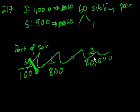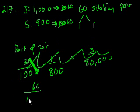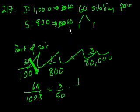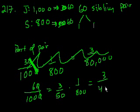Let's go back through our logic again. If I pick someone from the junior class first, the probability that I pick someone from a sibling pair is 60 over 1,000, which is 3 over 50. In order to have a complete sibling pair, when I go to the senior class, I have to pick that specific junior's sibling — only a 1 in 800 chance. The other 59 siblings are useless because they're not this person's sibling. Multiply them and you get 3 over 40,000.